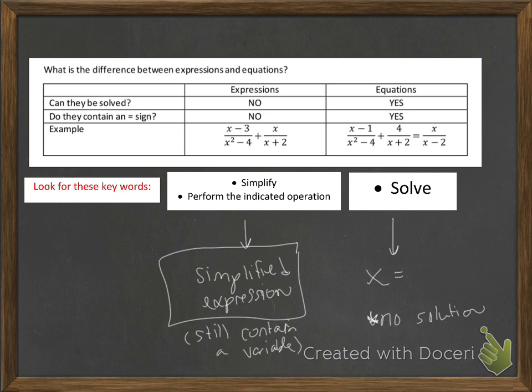However, if you're asked to solve, you're asked to solve for x or y or whatever variable they're using, you should end up with the variable equals something. Sometimes you have one solution, sometimes multiple solutions, sometimes no solution. But you should have x equals something, or b equals something, whatever your variable is.